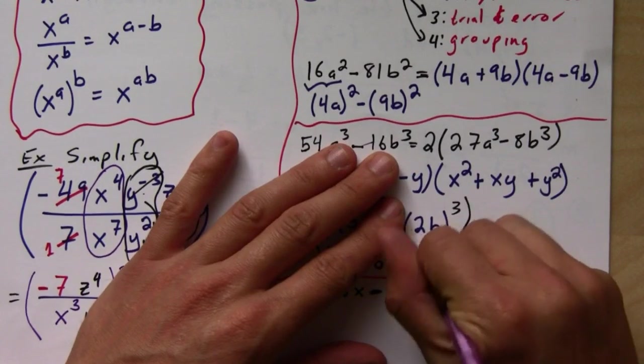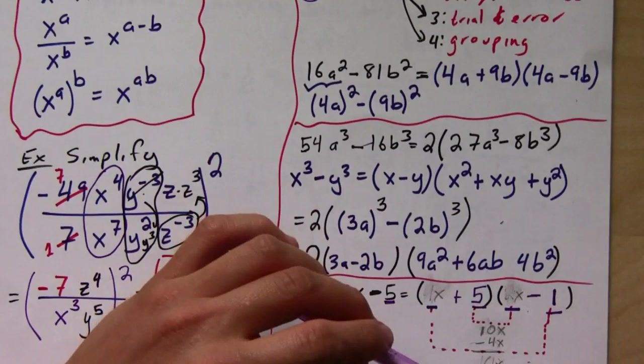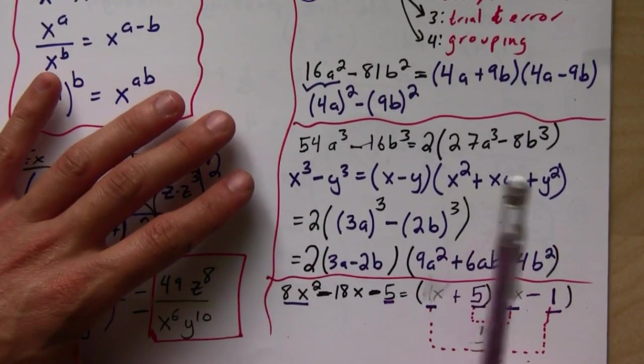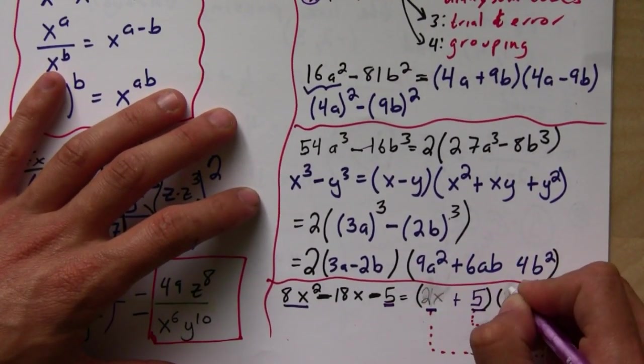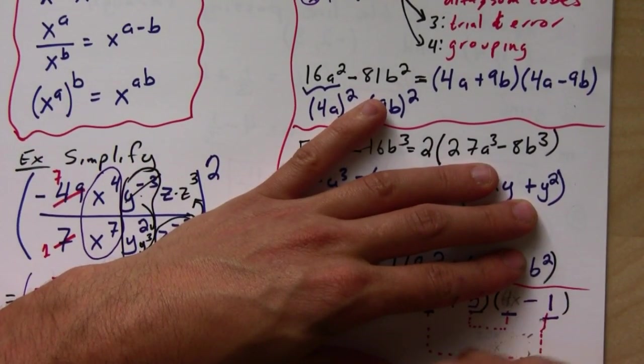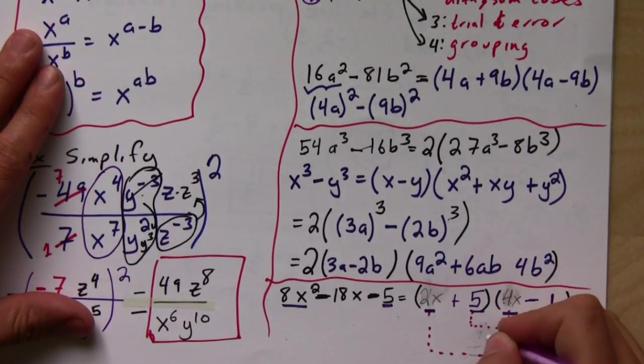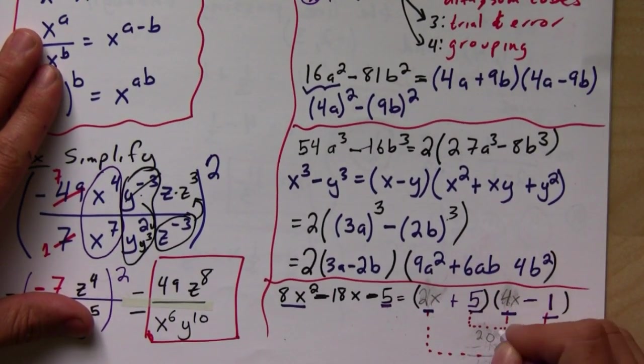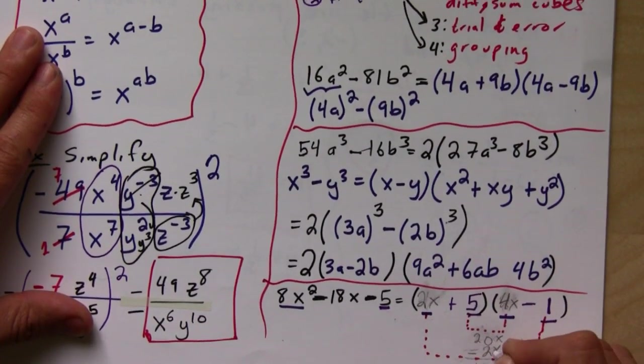So then you try switching them. Let me switch them here. Let's say we put 2x here and 4x here, and let's see what happens then. If you're good at doing math in your head, then you can sort of do this calculation in your head, but it's not necessary. So now let's multiply them again. 5 times 4x is 20x. 2x times negative 1 is negative 2x, and I get 18x.